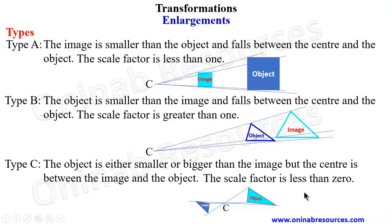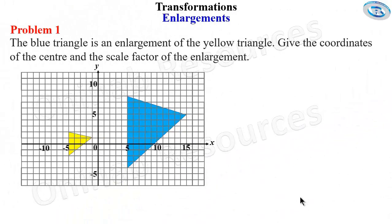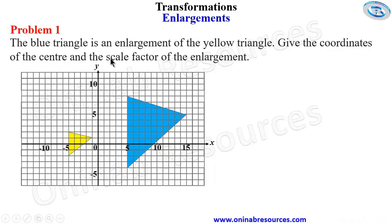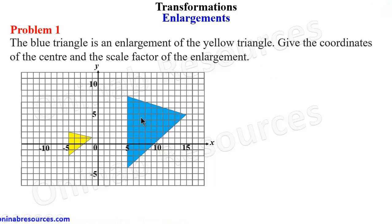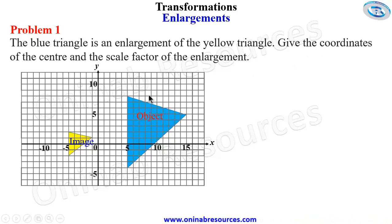From here we'll be looking at some solved problems. Problem one: the blue triangle is an enlargement of the yellow triangle. Give the coordinates of the center and the scale factor of the enlargement. The yellow triangle is the object and the blue triangle is the image.